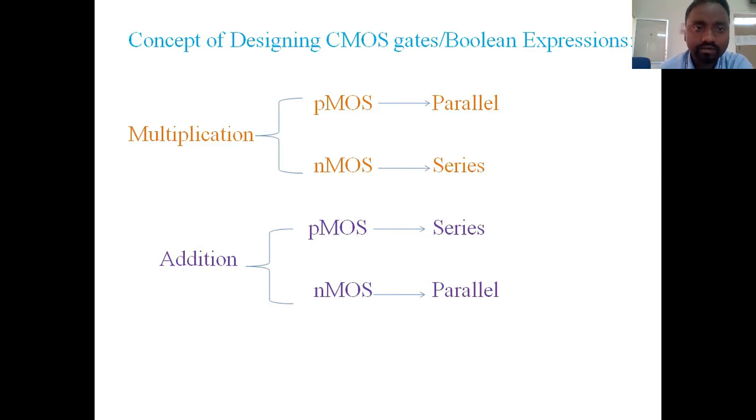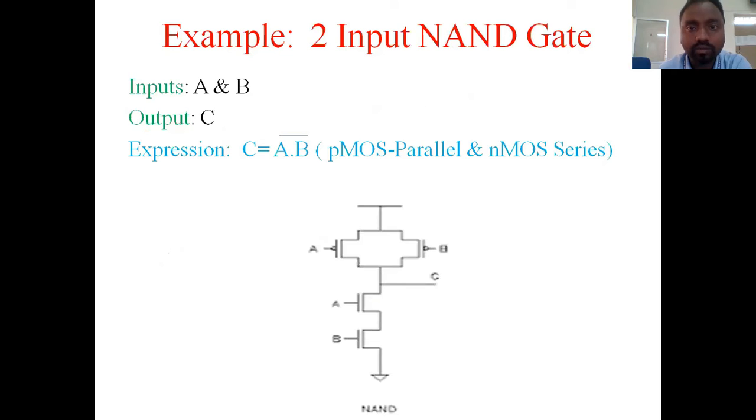We will see one by one with considering the example. The first example what we take is two input NAND gate. For example, if you are taking two input NAND gate, two inputs are A and B and output is C. So when we say two input NAND gate, the expression will be C equals to A dot B whole bar, or A into B whole bar.